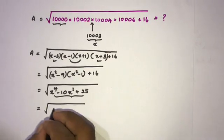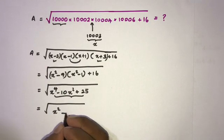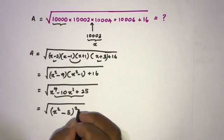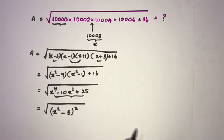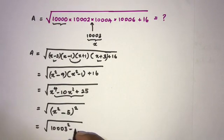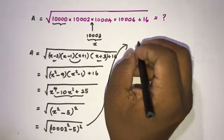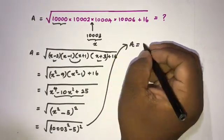We recognize this as a perfect square: (x² − 5)². So A equals the square root of (x² − 5)², which simplifies to x² − 5. Since x equals 10003, we substitute to get 10003² minus 5.